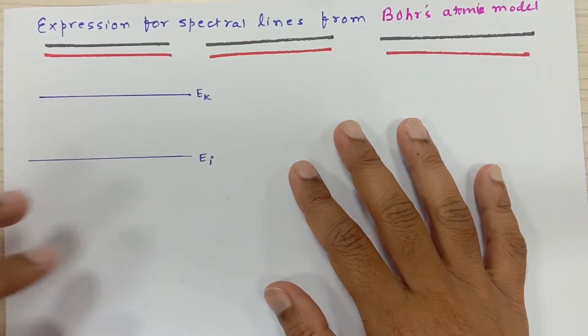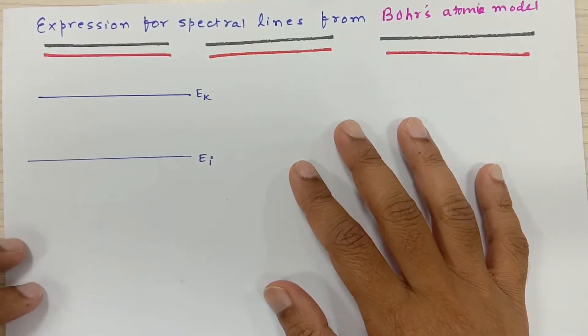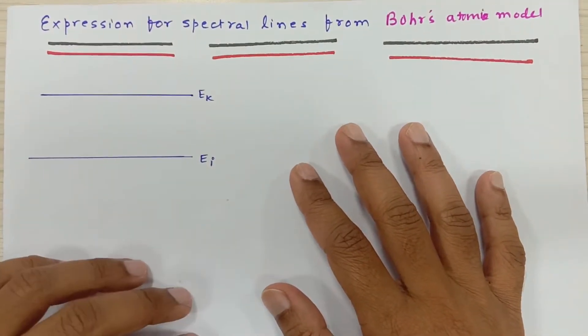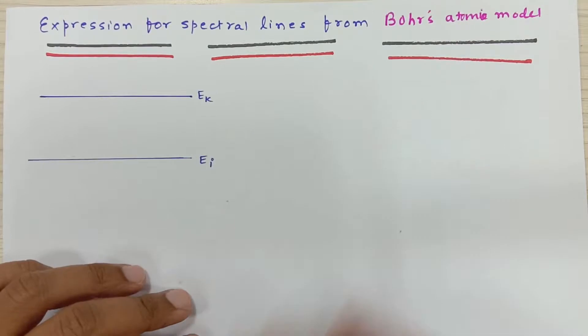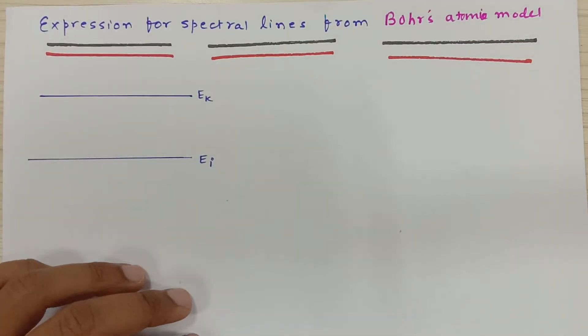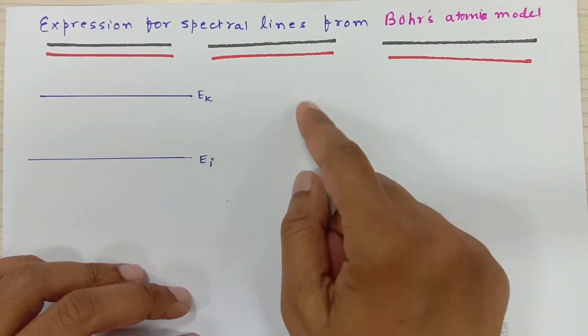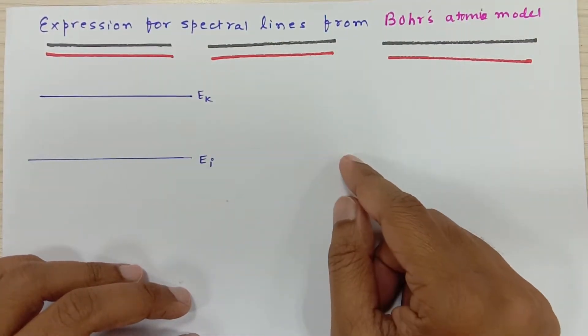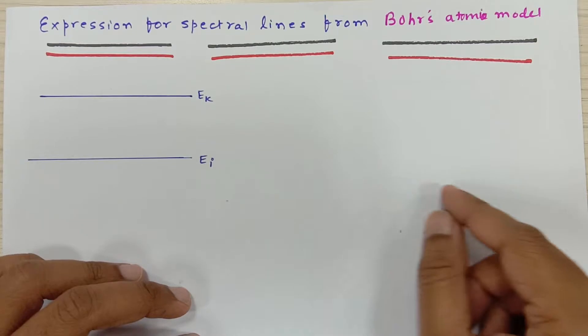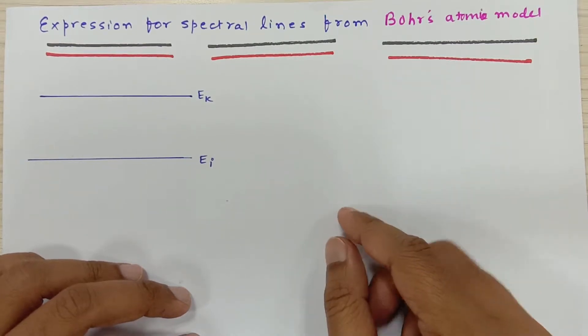Hello scientific brilliant people, how are you today? So today I am going to derive an expression for all the spectral lines: Lyman, Balmer, Paschen, Brackett, and Pfund series.